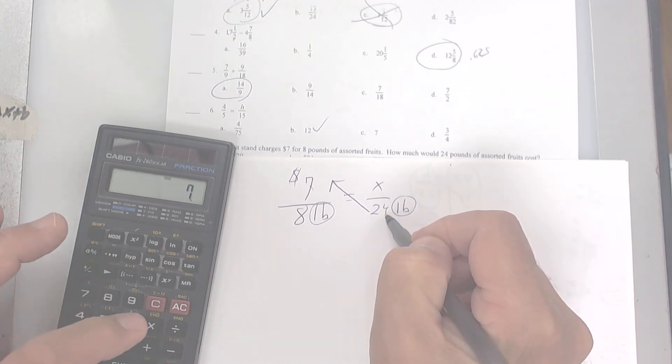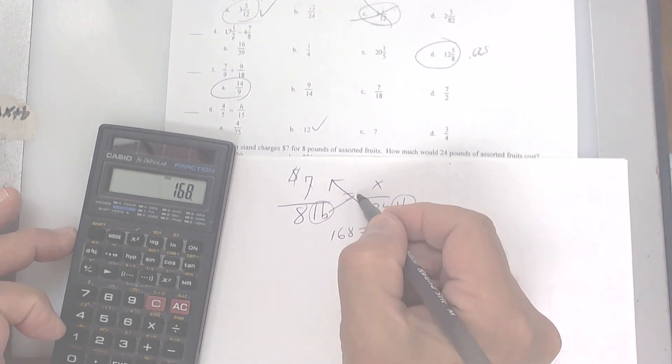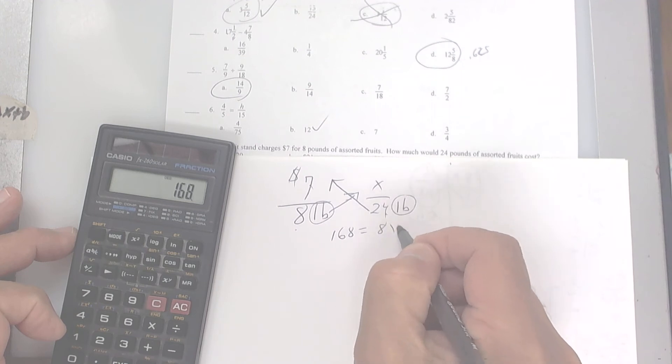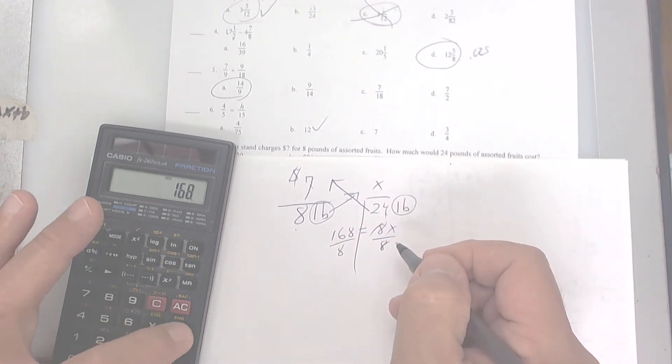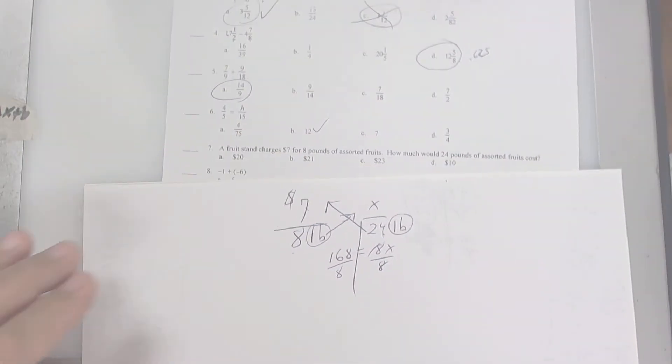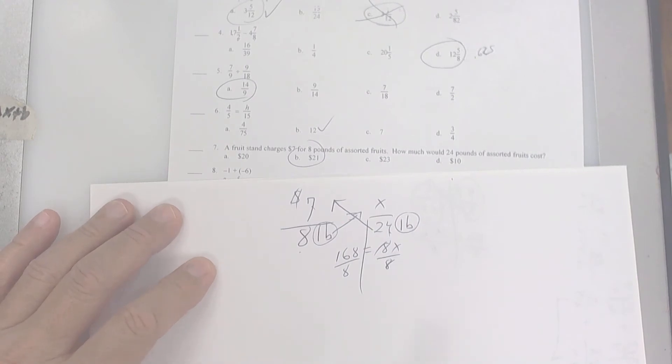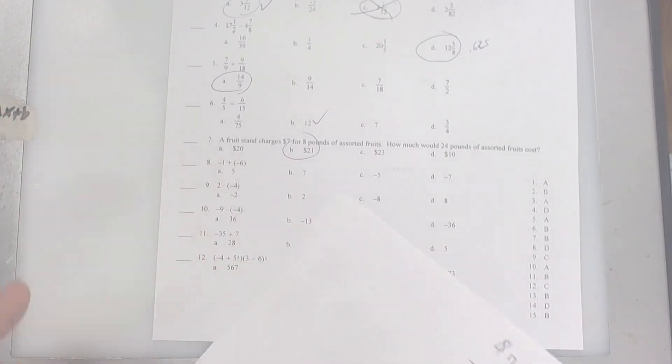So you're going to cross multiply. So you're going to get 24 times 7, whatever that is. So I get 7 times 24. And I get 168. So I get 168 is equal to, this right here is 8X. And now we're going to divide by 8. When we divide by 8, it's going to be divided by 8. And I get 21. So 21 should be the answer there. And there it is. Again, what you're doing is setting up a proportion. You got money over pounds equals money over pounds. Make sure you set it up the same way.